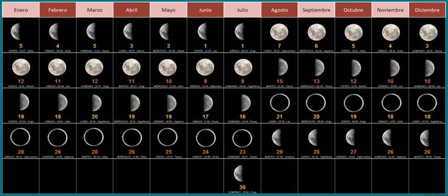A lunar calendar is a calendar based upon the monthly cycles of the Moon's phases, in contrast to solar calendars, whose annual cycles are based only directly upon the solar year. The most commonly used calendar, the Gregorian calendar, is a solar calendar system that originally evolved out of a lunar calendar system. A purely lunar calendar is also distinguished from a lunisolar calendar, whose lunar months are brought into alignment with the solar year through some process of intercalation.